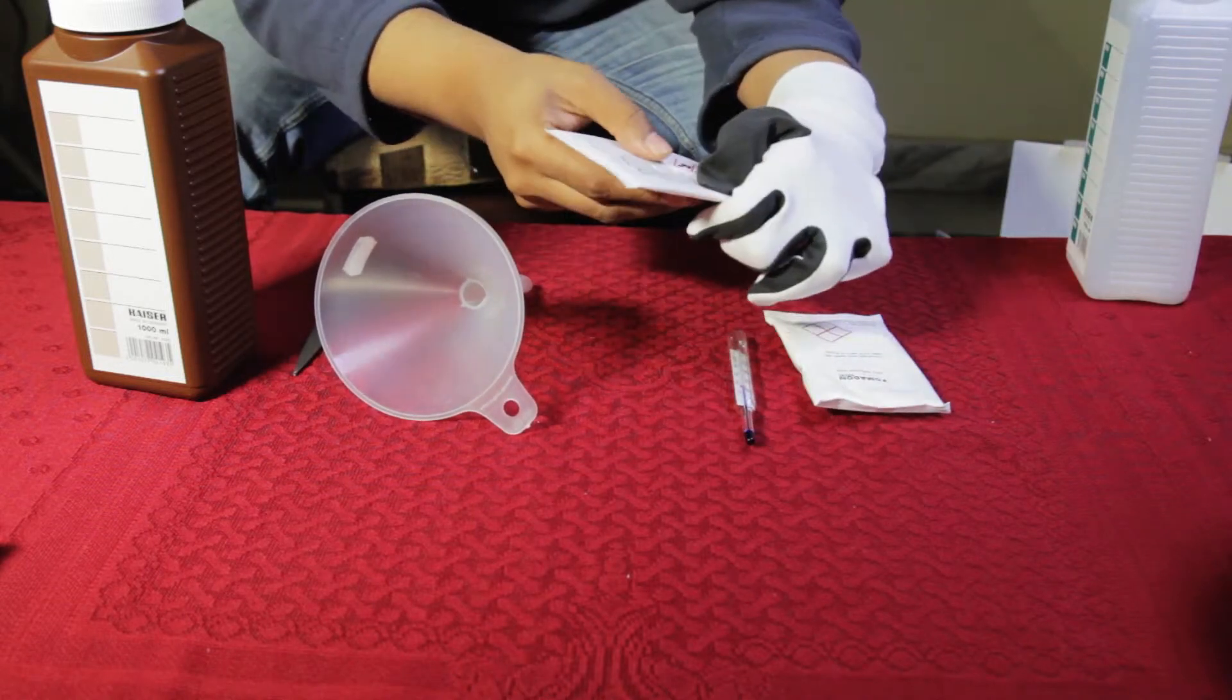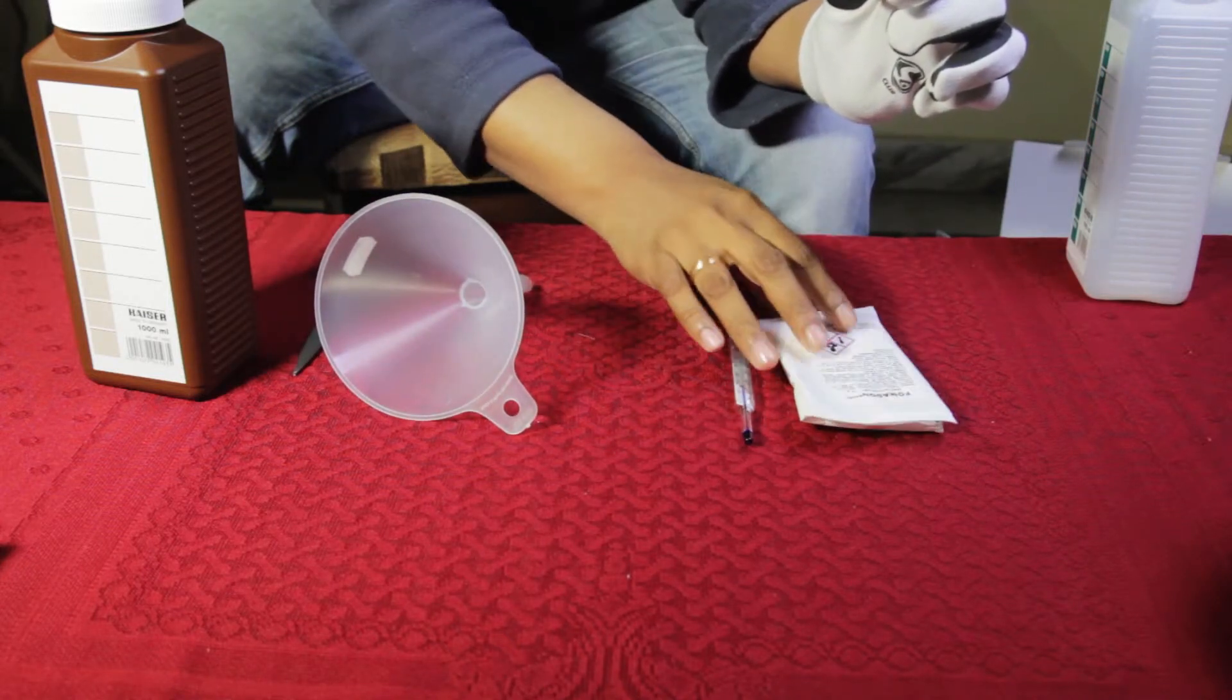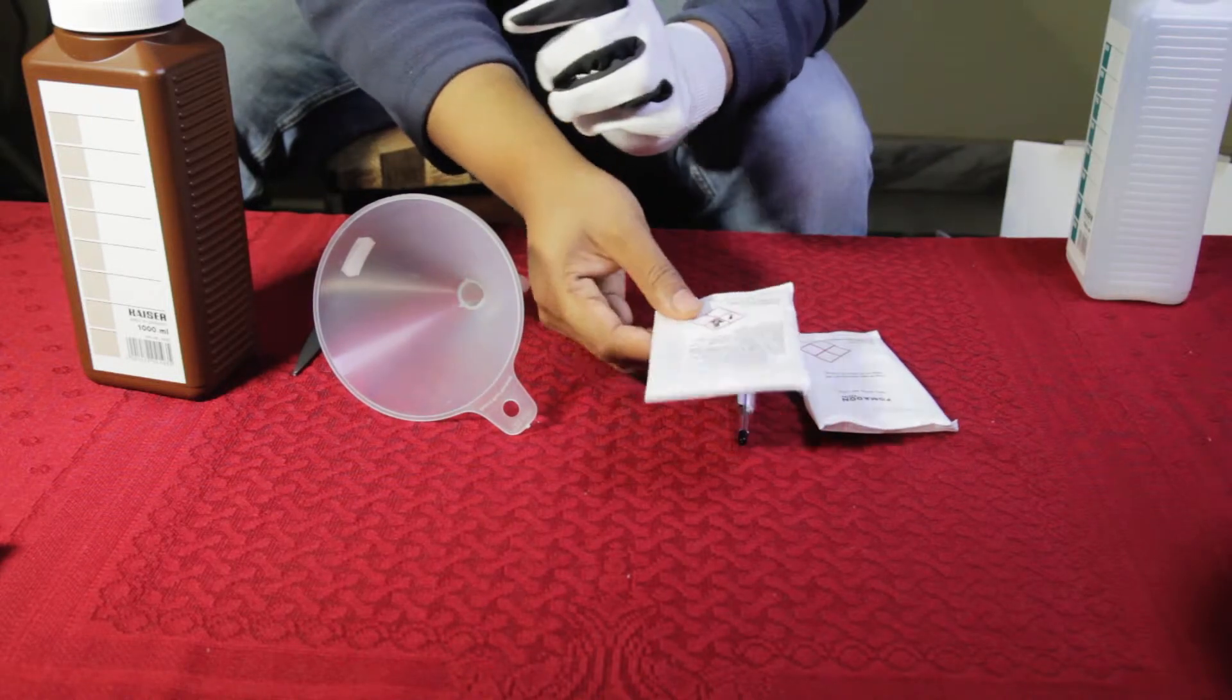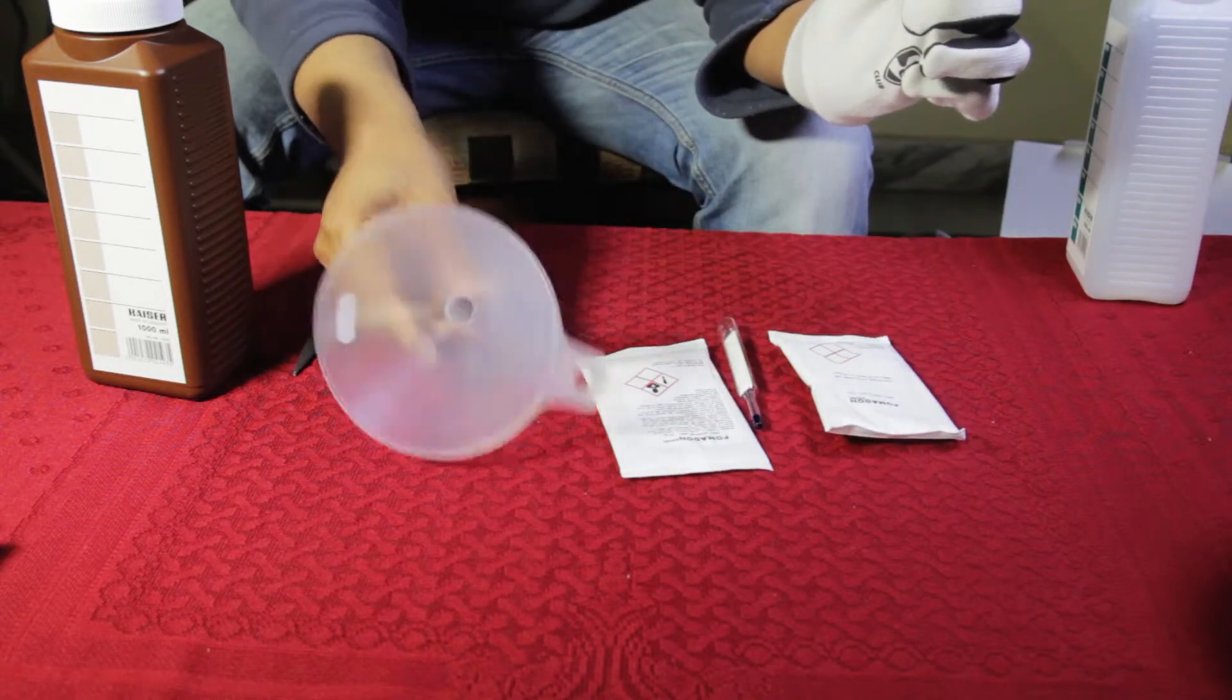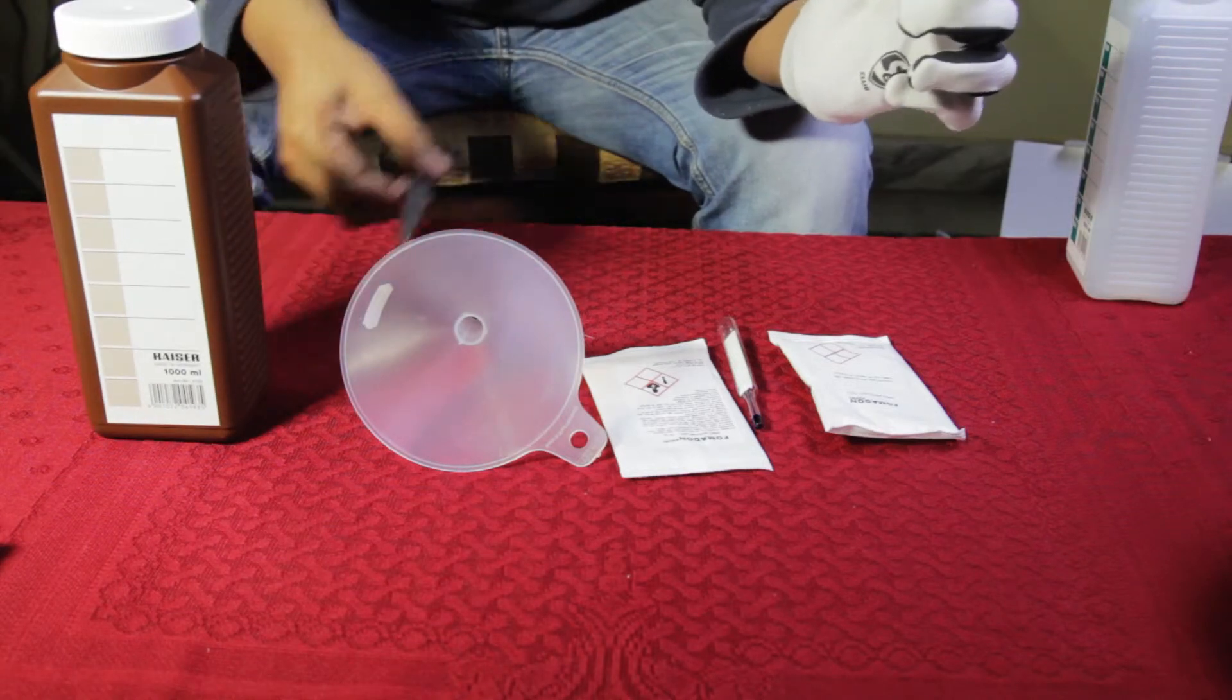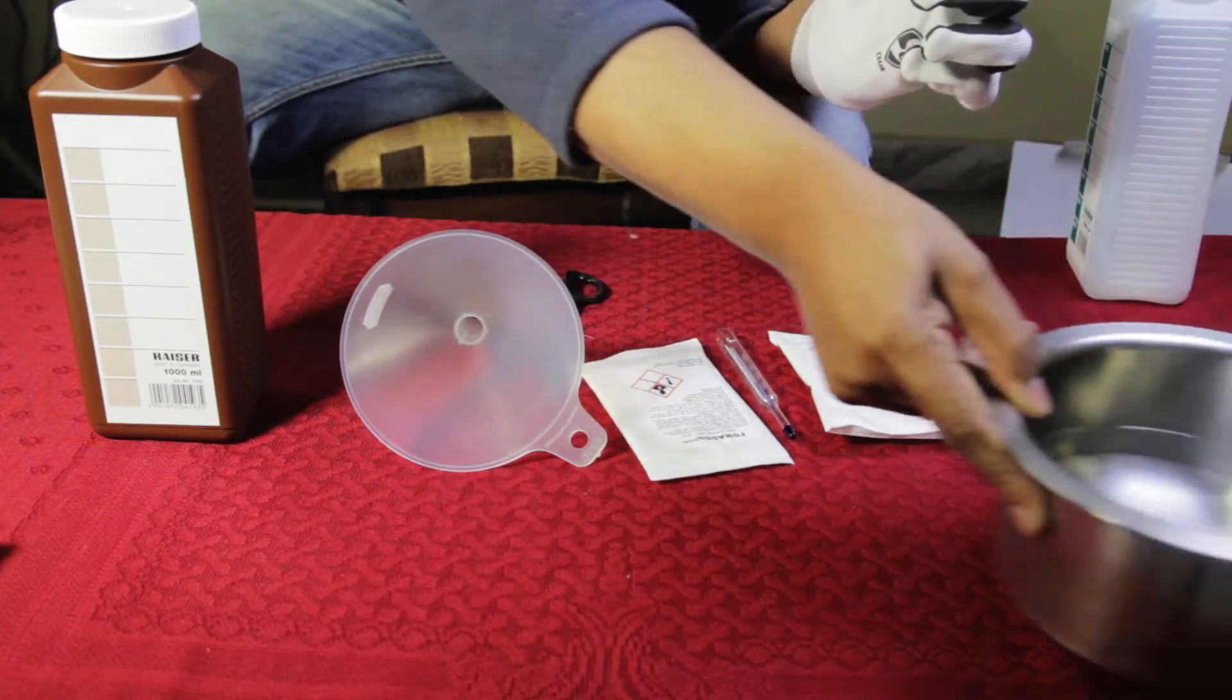So for this you will need the developer itself. They are packaging two small sachets: one is a smaller one which is 24 grams and another one is the larger one which is 100 grams. You need a funnel, bottle and scissors, and a thermometer and some water.